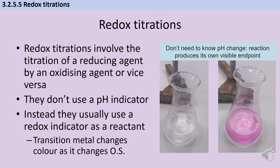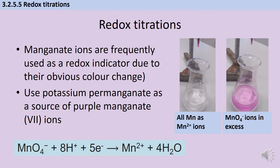Manganate ions are a classic example because they have a really clear and obvious color change — from purple in their +7 oxidation state, to colorless in their +2 oxidation state. When using manganese as a redox indicator, purple potassium permanganate is used as a source of manganate ions where manganese has an oxidation state of +7. As the manganese is reduced to Mn²⁺ ions, that purple color is lost and the solution becomes colorless.